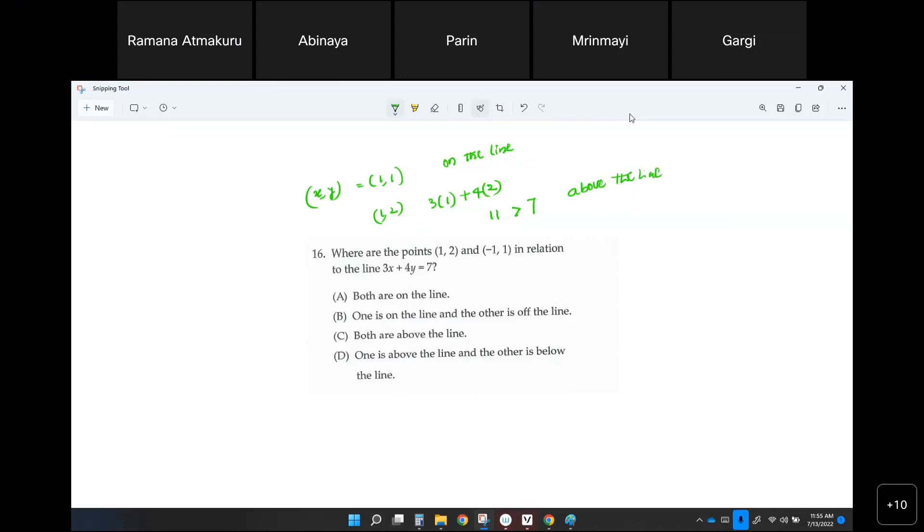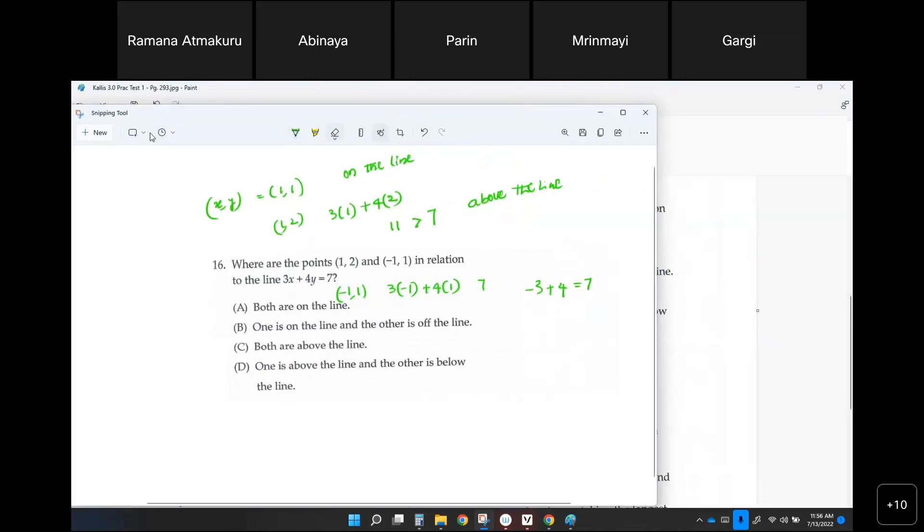Whereas if you plug in negative 1 comma 1 for x and y, so negative 3 plus 4. Is that equal to 7? By the way, sorry, that's not equal to 7. No, that's actually 1 less than 7, correct? This is below the line.